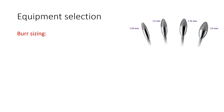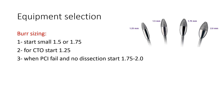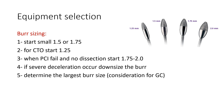There are several burr sizes ranging from 1.25 to 2.5. Usually we start with a small burr of 1.5 or 1.75. For CTO, we may need to start with a smaller 1.25. When PCI fails — that is for secondary rotational atherectomy — and where there is no dissection, a larger burr of 1.75 or 2 can be used. If severe deceleration occurs with the larger burr, we can downsize. The burr-to-artery ratio should be in the range of 0.5 to 0.7, and with the concept of plaque modification, a 0.5 ratio is usually enough.